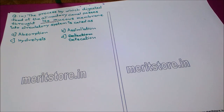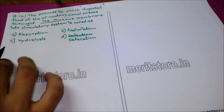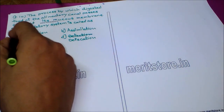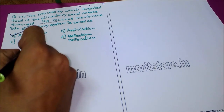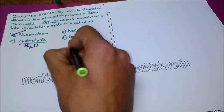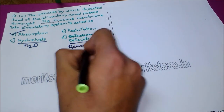The next question: the process by which digested food of the alimentary canal passes through its mucous membrane into the circulatory system is called — option A: absorption, option B: assimilation, option C: hydrolysis, option D: defecation. Absorption is the correct answer. Hydrolysis is the breakdown in the presence of water; defecation is the removal of waste in the form of fecal matter outside the body.